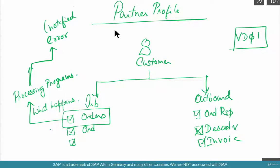What happens when there is an error? Who should be notified? What's the agent — a particular agent can be notified. If it is successful, what happens? All of this can be configured in the partner profile. This is where the bulk of the configuration that a functional consultant does for EDI happens, because it's all part of a functional consultant's role. Essentially, a partner profile is like a gate pass.